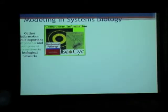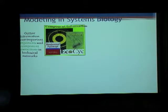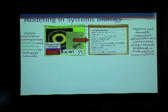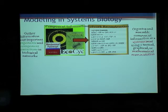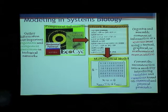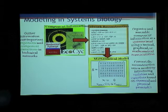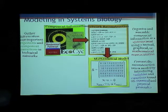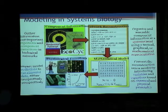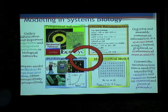Modeling systems biology is basically four steps. First, we gather information about the important components and the component interactions in biological networks from literature. This is then organized and assembled at the systems level using either textual, graphical, or mathematical representation. Then we go on to the modeling — we convert the reconstruction into a model by using variables and equations based on chemical and physical principles. Once the model is complete, we analyze results and compare it with existing experimental data, or we use the results of the model to design experiments. Once the results are validated and the whole cycle is complete, the results are introduced.